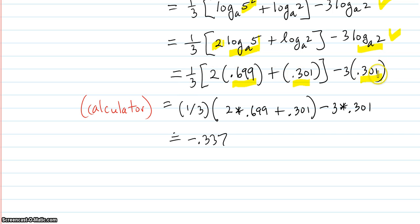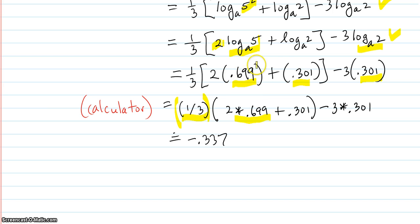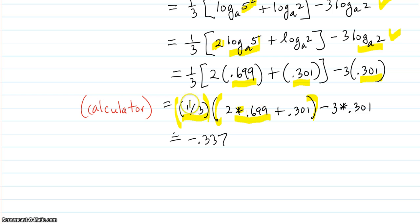Now put it all in the calculator in one shot and press enter — that way you don't accumulate round-off error. Enter it as: parentheses, one-third times parentheses, then 2 times 0.699 plus 0.301, close the inner parentheses, then minus 3 times 0.301. The order of operations will handle it correctly. Enter that whole expression and you get your result.